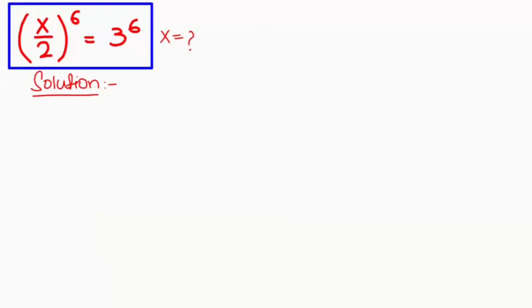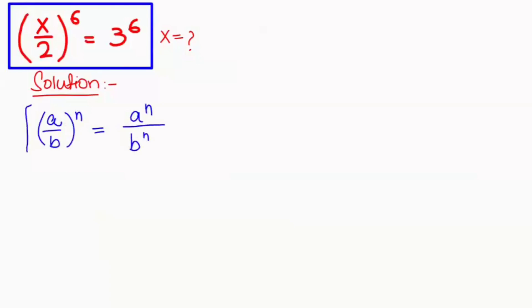In the first step, I am going to apply the exponential rule that is (a/b) to the power of n can be written as a to the power of n over b to the power of n. So this equation turns to x to the power of 6 over 2 to the power of 6 equals 3 to the power of 6.